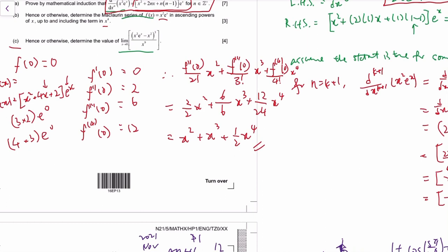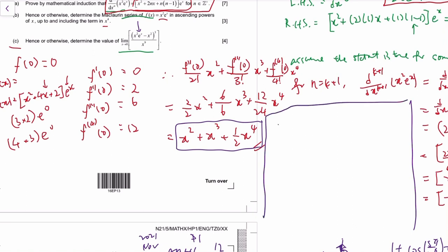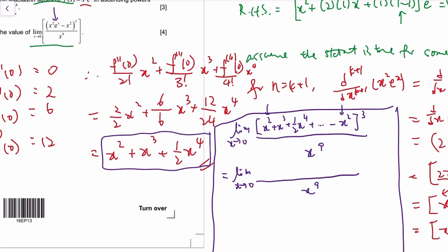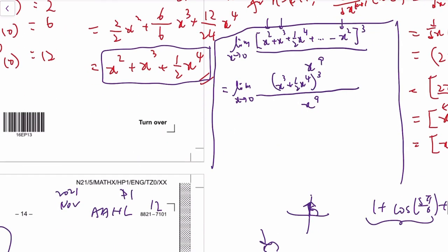Now we need to find the limit. We have that expression raised to the power of three, minus x². The strategy is to replace f(x) with its Maclaurin series. So the Maclaurin series of x²eˣ is x² + x³ + (1/2)x⁴ plus higher power terms. We subtract x² — those cancel — leaving x³ + (1/2)x⁴ plus higher power terms.